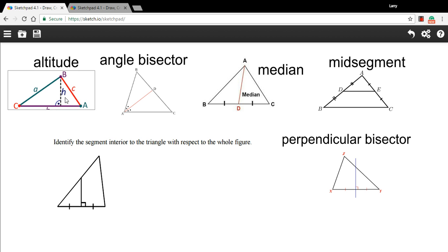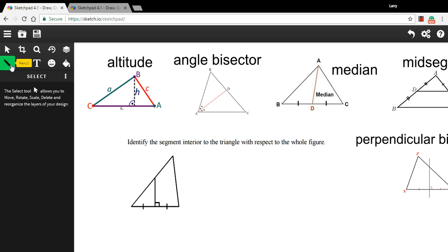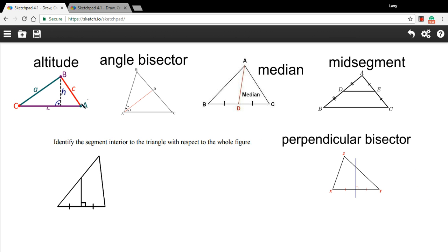You probably have seen an altitude of a triangle before. When we calculate the area of a triangle, we take the base, multiply it by one-half, and then multiply it by the height. That's another name for the altitude. You can recognize the altitude because it starts from a vertex and then it joins the other side at a 90-degree angle. So that's an altitude.